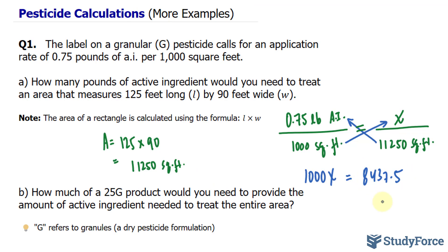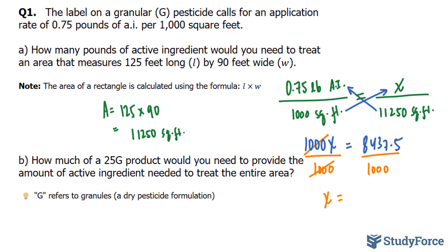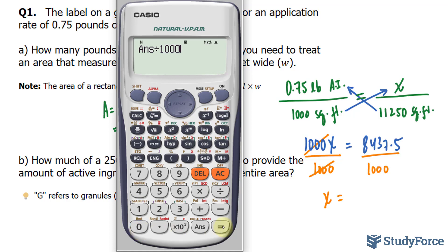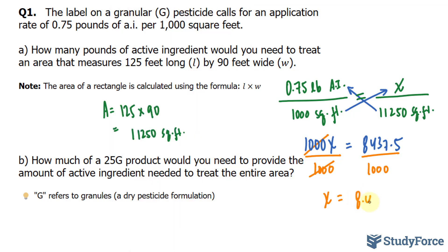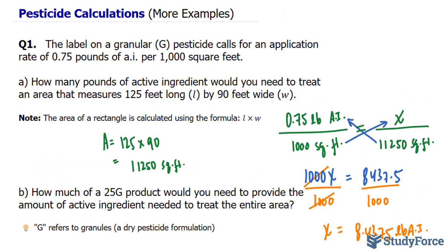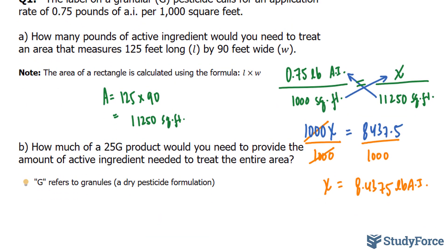You never want to round midway through your calculation. You always want to keep as many digits as possible. Finally, to solve for x, we apply the algebraic technique of dividing both sides by 1,000 to isolate for x. By dividing both sides by 1,000, we'll end up getting what x is. The number on our screen divided by 1,000 makes 8.4375, and that's pounds of active ingredient. At this point, you can round, and it is best to round to two decimal places, given that this extends to two decimal places. You should have an answer that is 8.44 pounds AI.